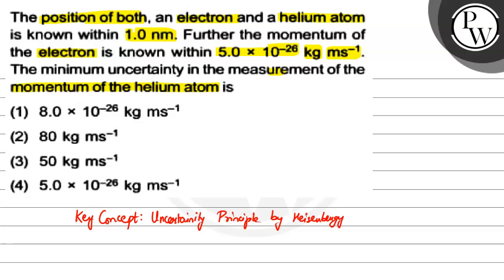By this principle, what we can say is that we can't determine the position and momentum simultaneously. In mathematical expression it's written as Δx · Δp ≥ h/4π, where Δx is the uncertainty in position and Δp is the uncertainty in momentum.